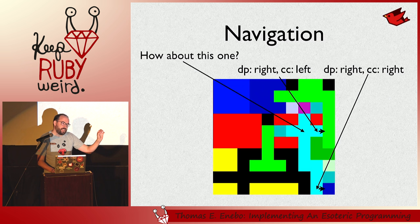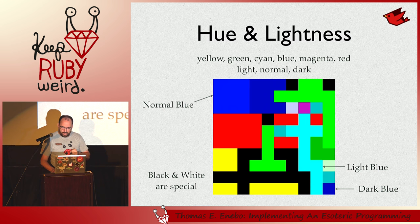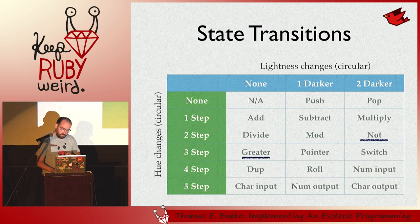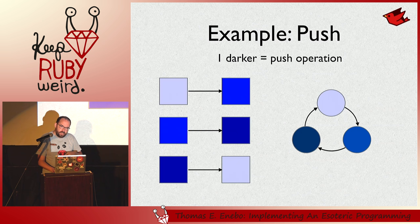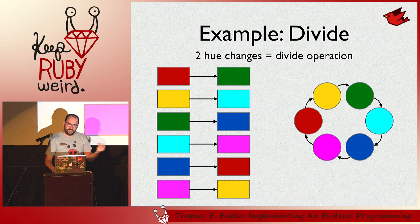But it gets easier. There are six colors, and each color has three different shades. When you move from one group to the next group, you look up in this table what operation you should perform. We've got stack-based operations, math, comparators, input and output, and then pointer and switch, which just take the top value and spin those values around. These three transitions of blue show you going one lightness darker, and this would be a push. You'll notice that it's just a cycle.